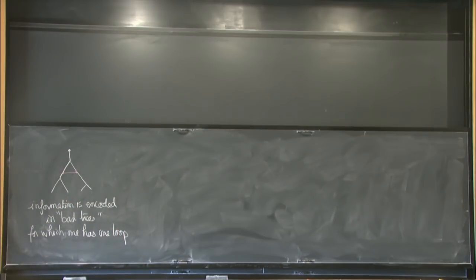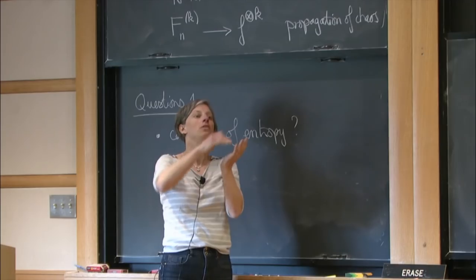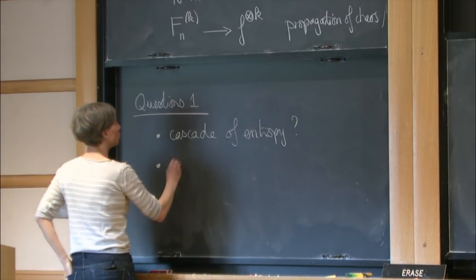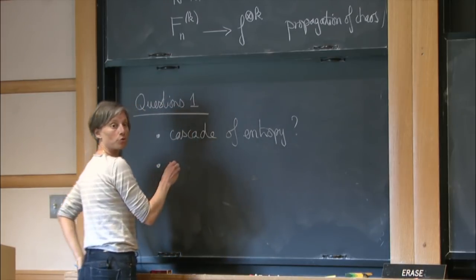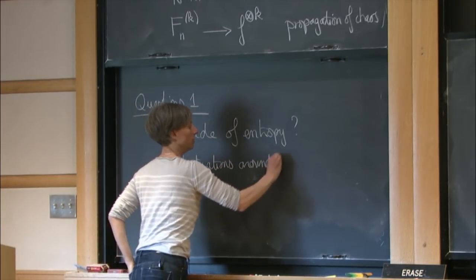Of course this is not really precise — we would like to understand much more the structure of these correlations. This is something that will be really important. It is important to understand the structure of correlations if you would like to say more than just the law of large numbers — for example, to say something about the small fluctuations around the Boltzmann equation.